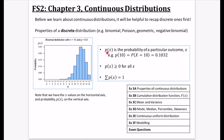A quick note on notation: lowercase p(x) means the probability of a particular outcome, so p(10) gives the probability that x equals 10. With n=15 and p=0.8, the bar at x=10 has height approximately 0.1032. The sum of all these probabilities must be greater than or equal to zero — a negative probability wouldn't make sense — and the sum of all probabilities equals one. The x values are on the horizontal axis and the probability p(x) is on the vertical axis.